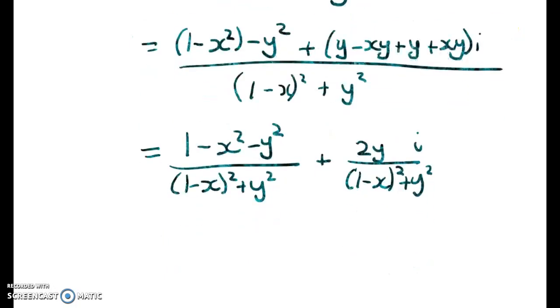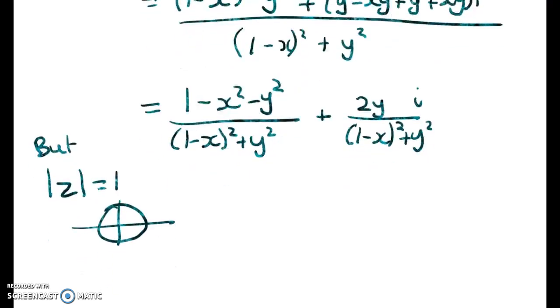Okay, now what do we know? Well, we know that, so we can write, but the modulus of z is equal to 1. So what does it mean for the modulus of z to be 1? Well, that means that the square root of x² + y² is 1. So x² + y² is equal to 1, squaring both sides.